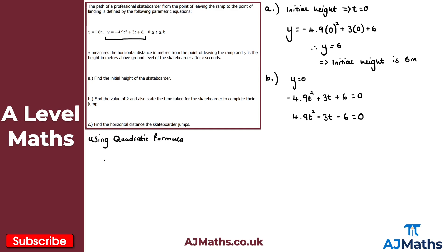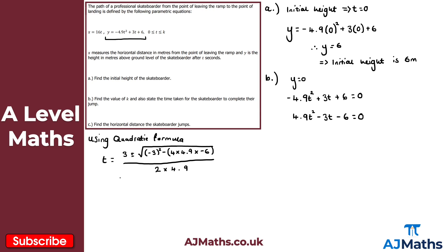Applying the quadratic formula: t equals (minus b plus or minus the square root of b squared minus 4ac) over 2a. With a equals 4.9, b equals minus 3, c equals minus 6, this gives t equals (3 plus or minus the square root of (9 plus 4 times 4.9 times 6)) over 9.8. Evaluating under the square root gives 126.6, so t equals (3 plus or minus the square root of 126.6) over 9.8.